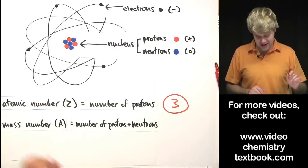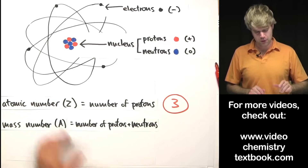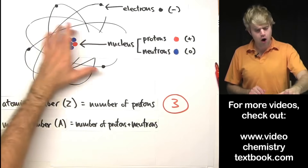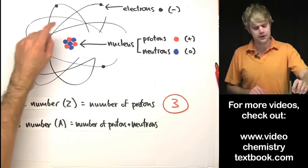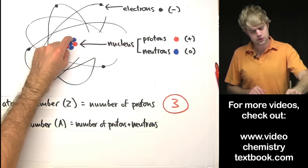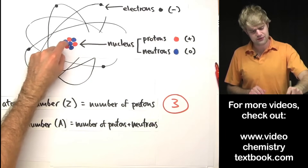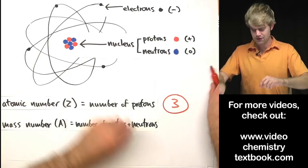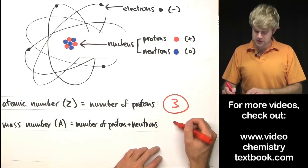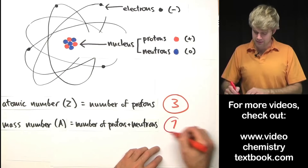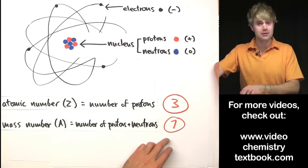So for mass number, we want to count all of these together: 1, 2, 3, 4, 5, 6, 7. The mass number of our atom here is going to be 7.